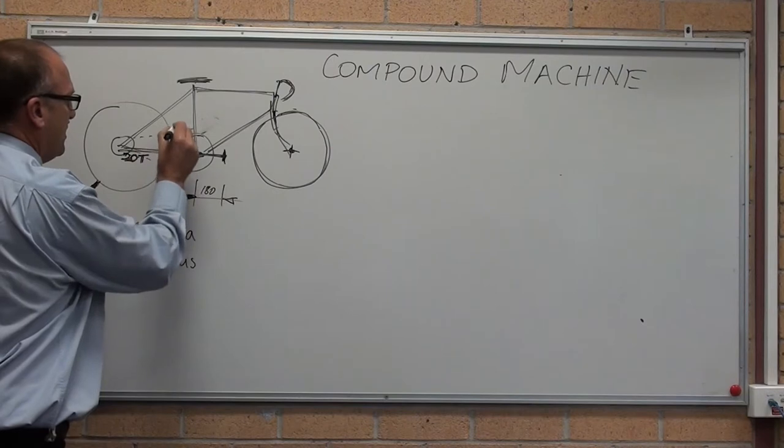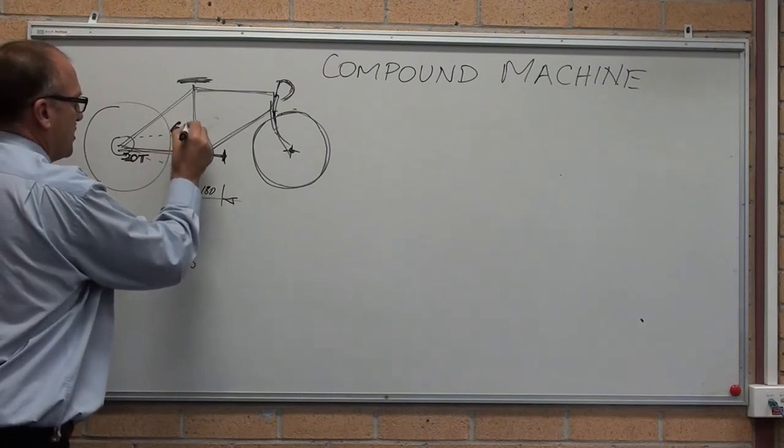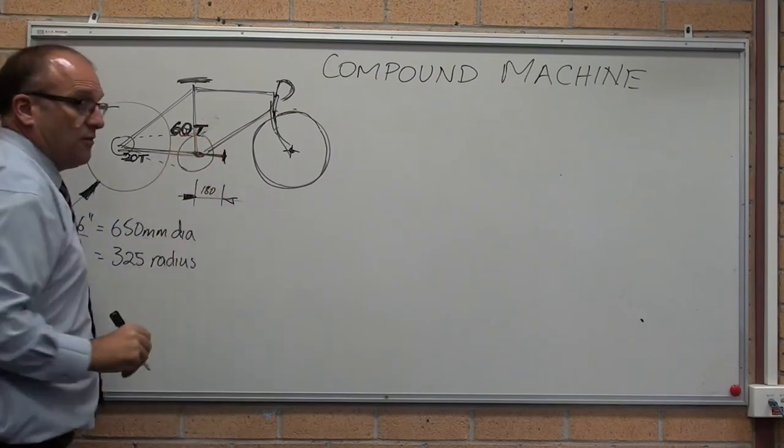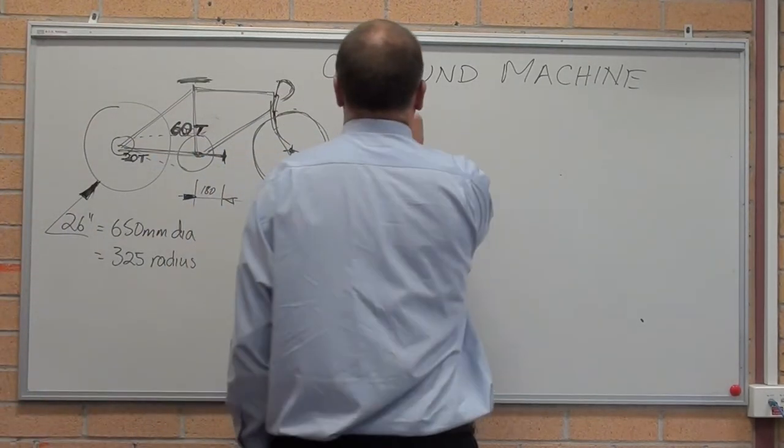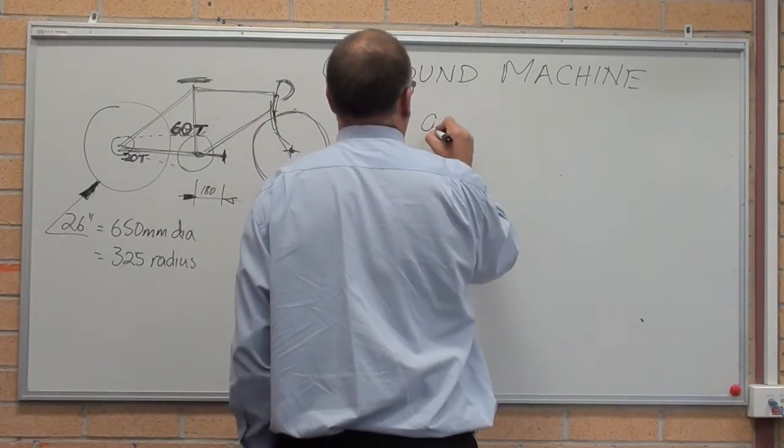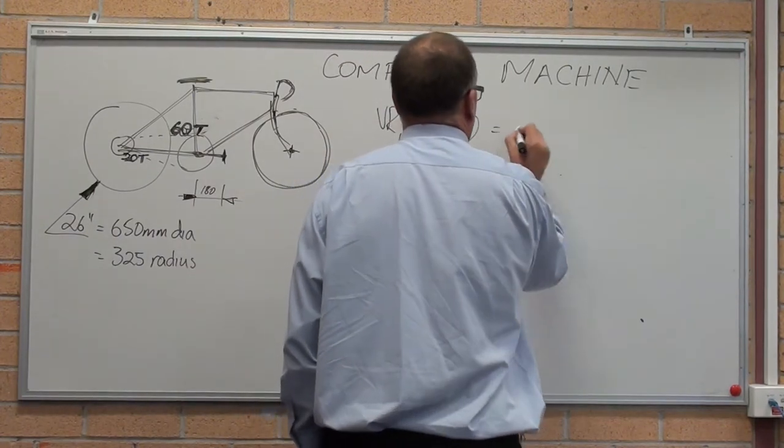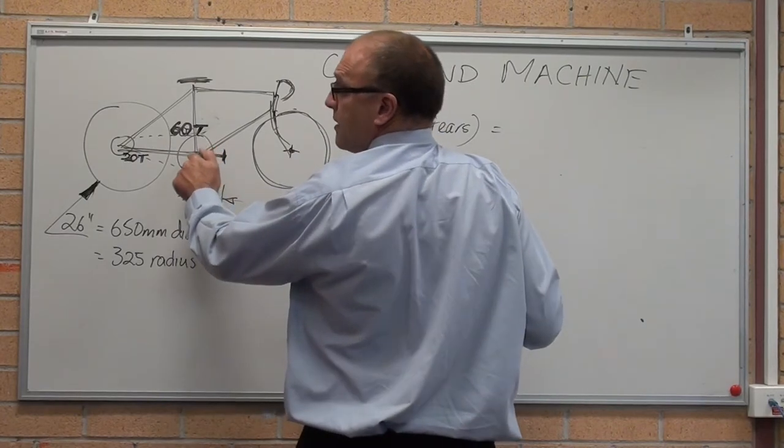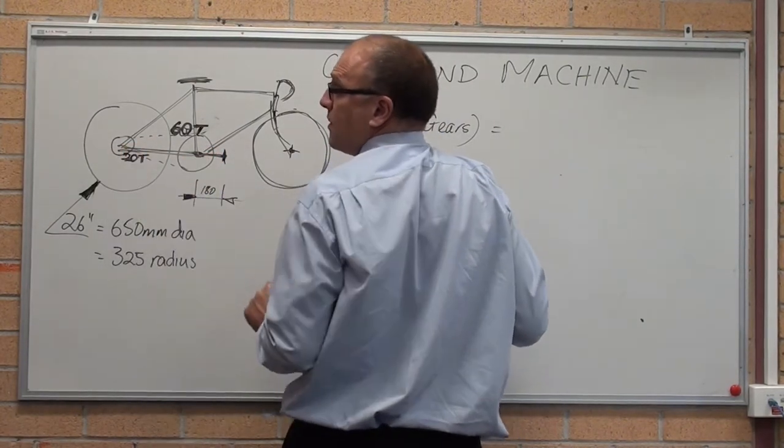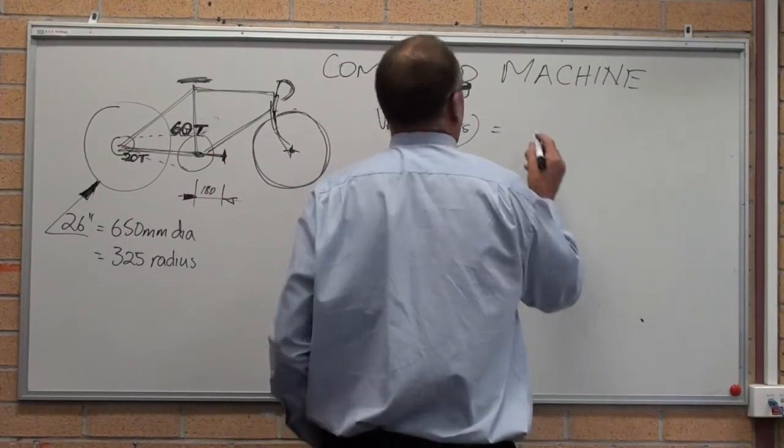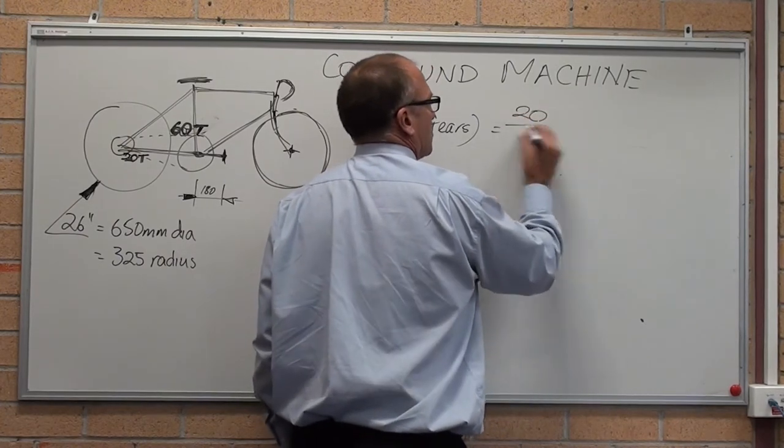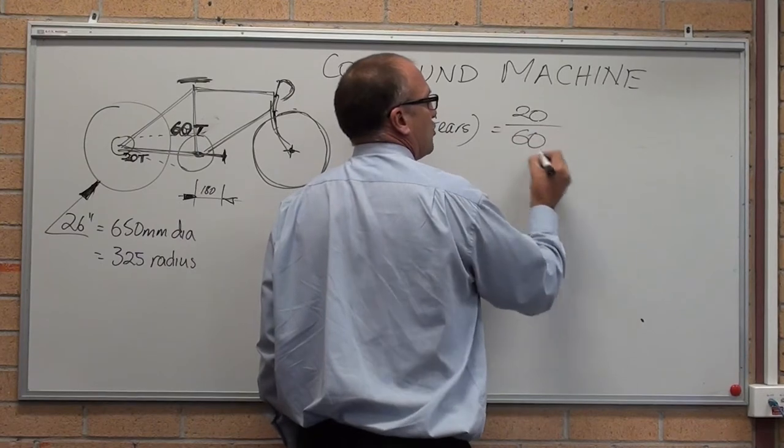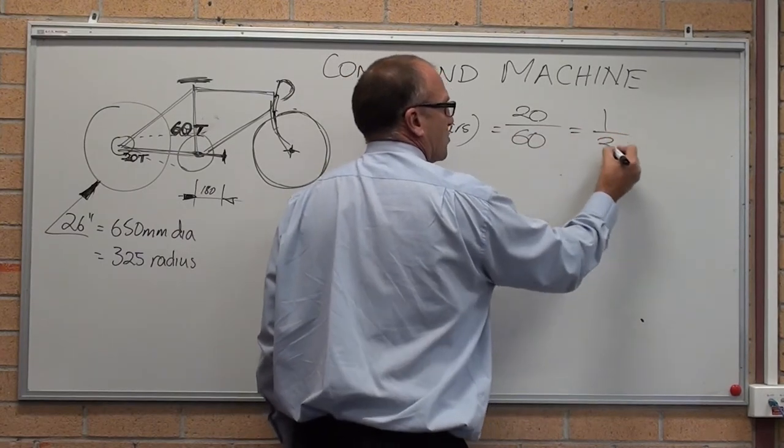20 teeth cog here, 60 tooth cog here. Your velocity ratio. Velocity ratio 1 was the gears, equals the velocity, that one is spinning slower, the effort is spinning slower than the load. Velocity ratio equals driven divided by driving, 20 divided by 60 equals 1 on 3.